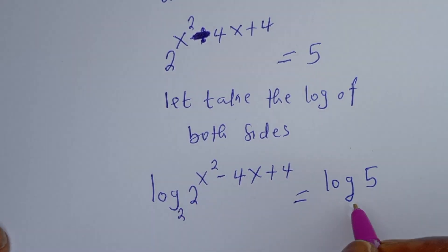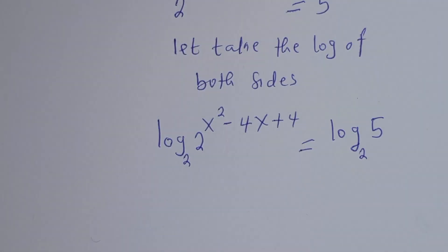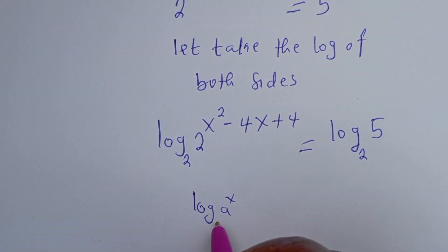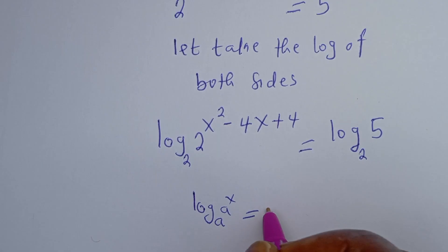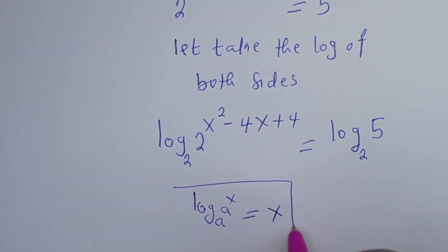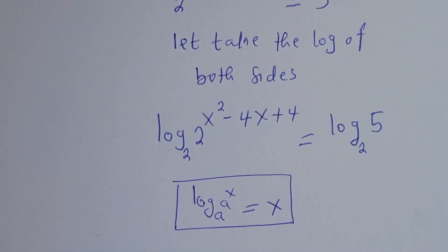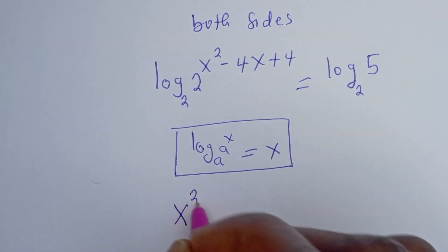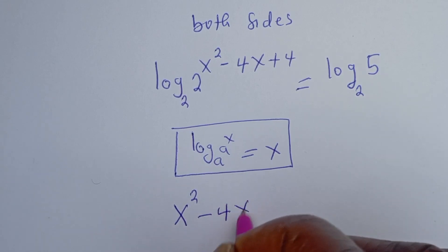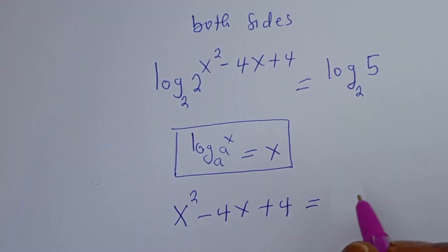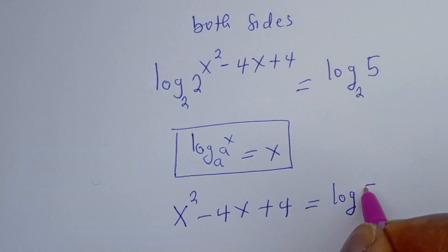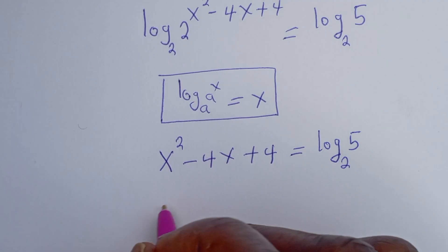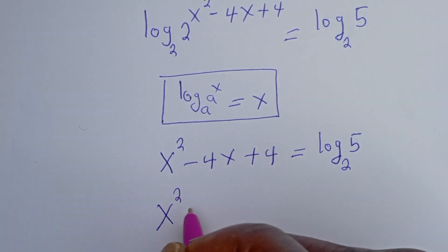From here, let's take the log of both sides: log of 2 to the power of s squared minus 4s plus 4 is equal to log 5. Let's work in base 2 — if you have log base a of a to the power of x, this equals x. So this becomes s squared minus 4s plus 4 is equal to log base 2 of 5.